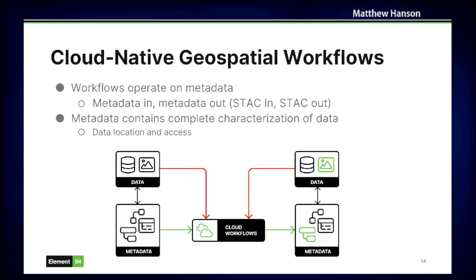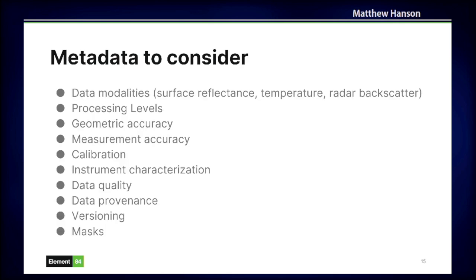I want people to start thinking about cloud-native geospatial workflows that work on metadata and validate what they need, with data producers providing all the necessary metadata so that algorithms can automatically and programmatically determine whether the data is valid for the process. There's a lot of metadata to consider: the processing level, geometric and measurement accuracy, calibration, and cloud masks. But as long as you characterize this, that's really all that's needed. So stop thinking about analysis ready data — start thinking about analysis ready metadata. Thank you.